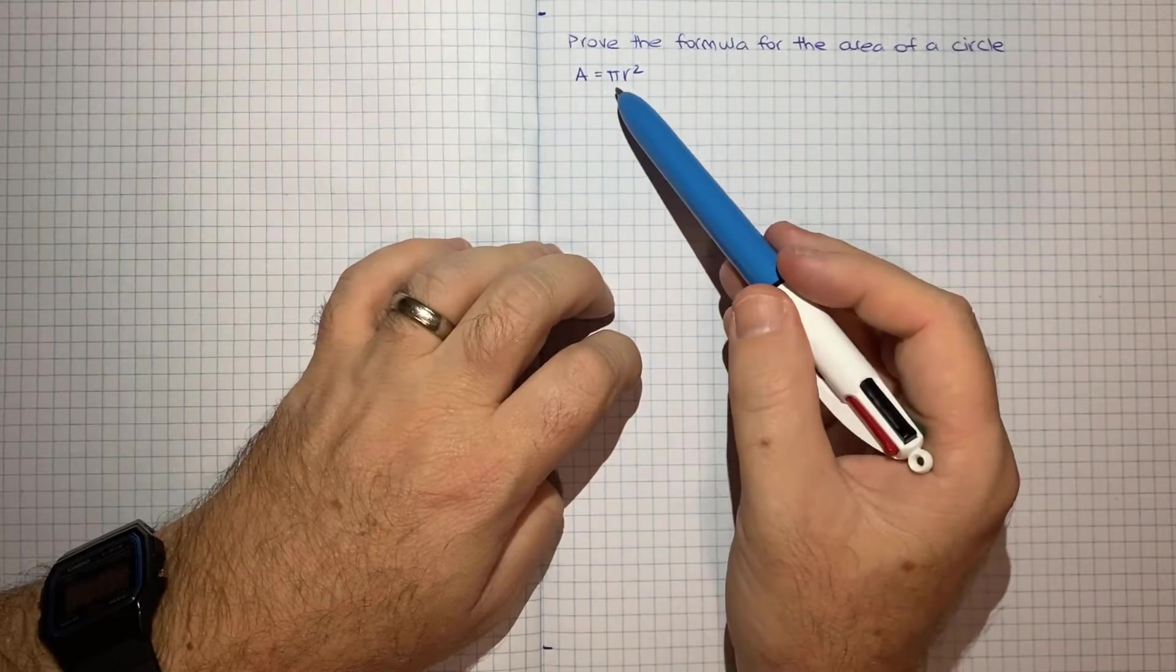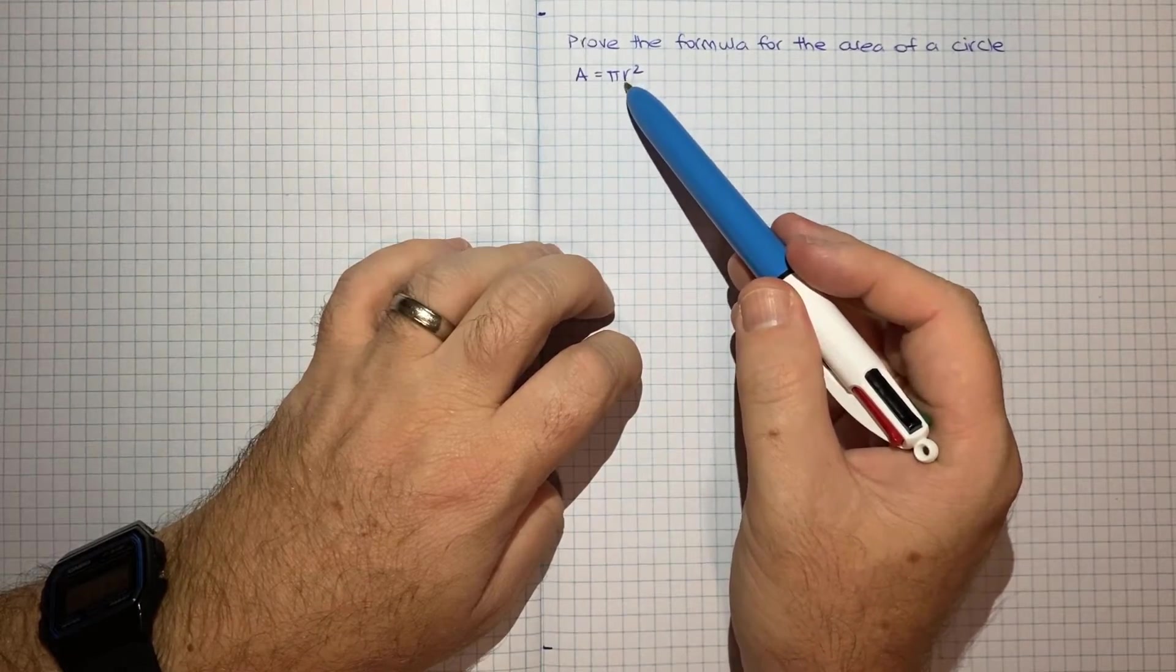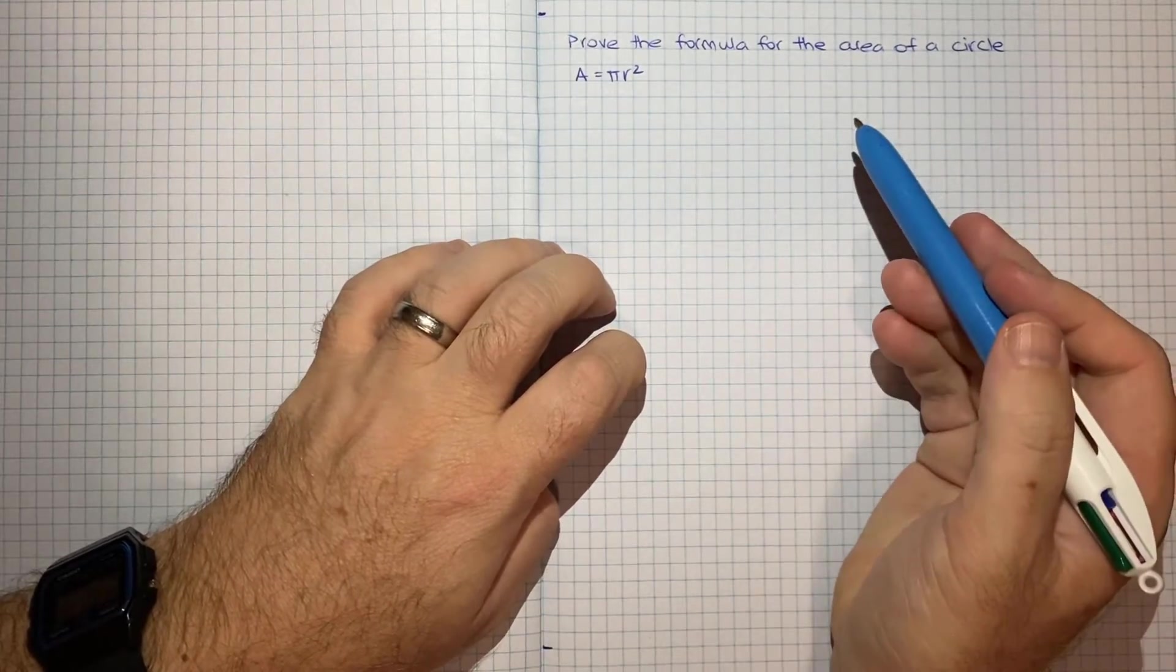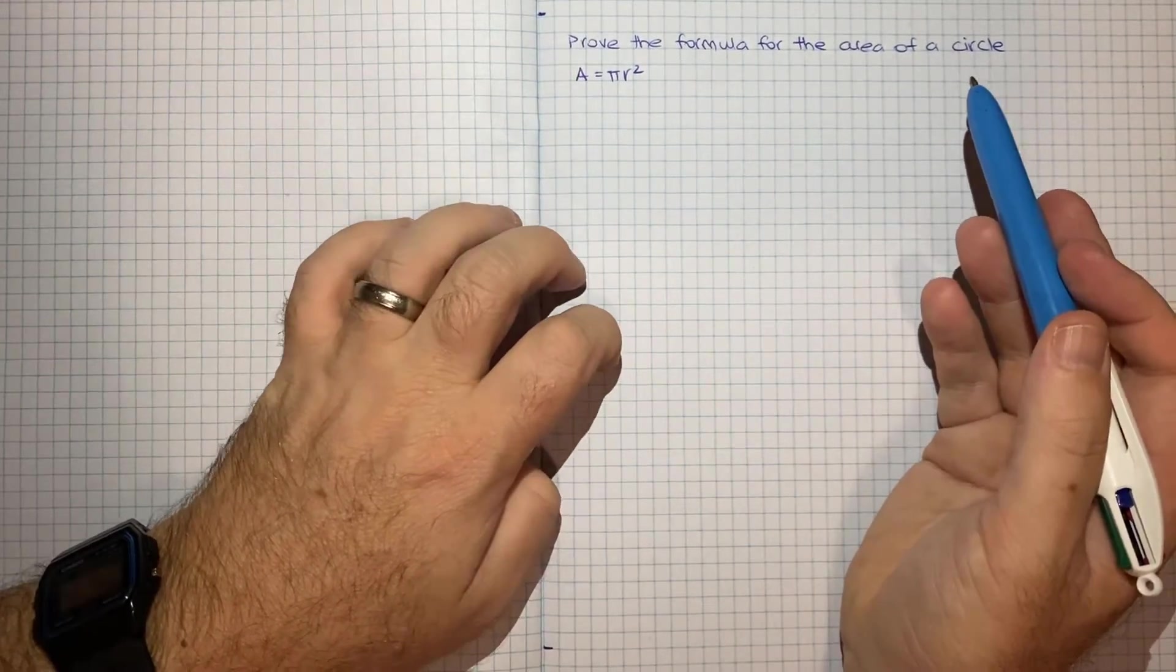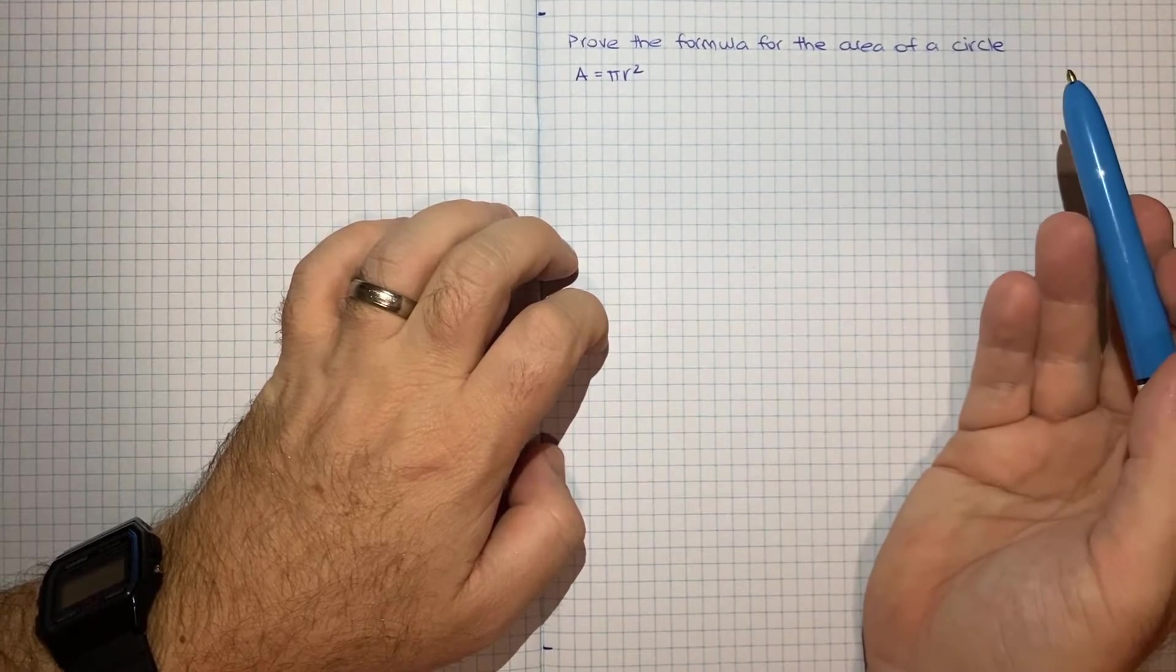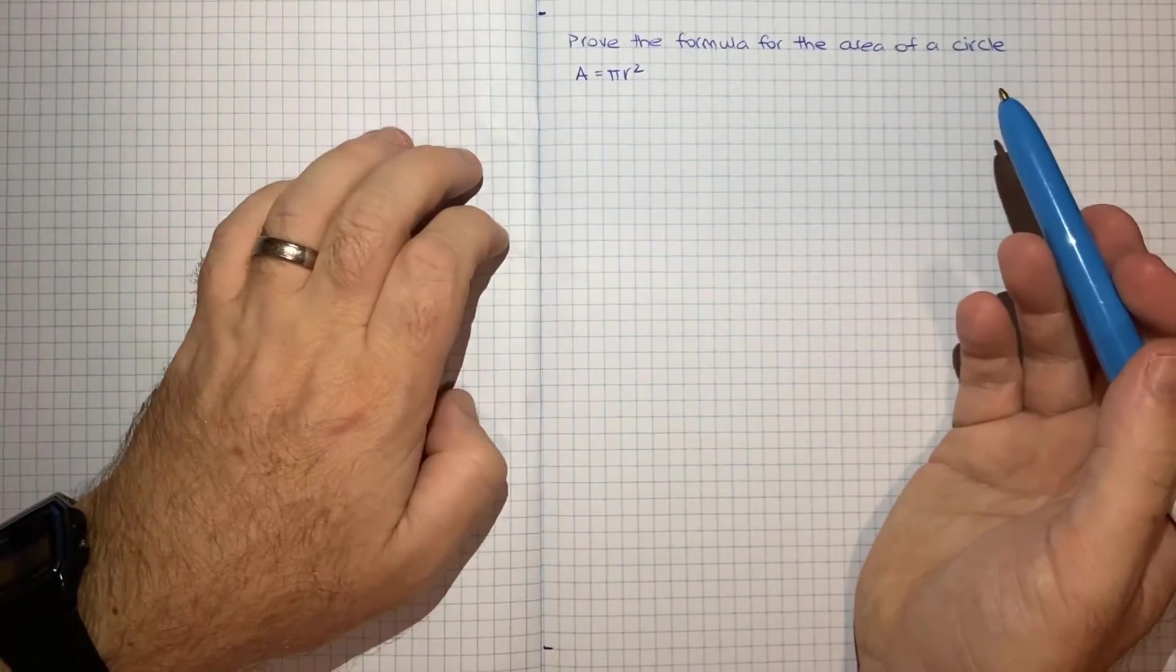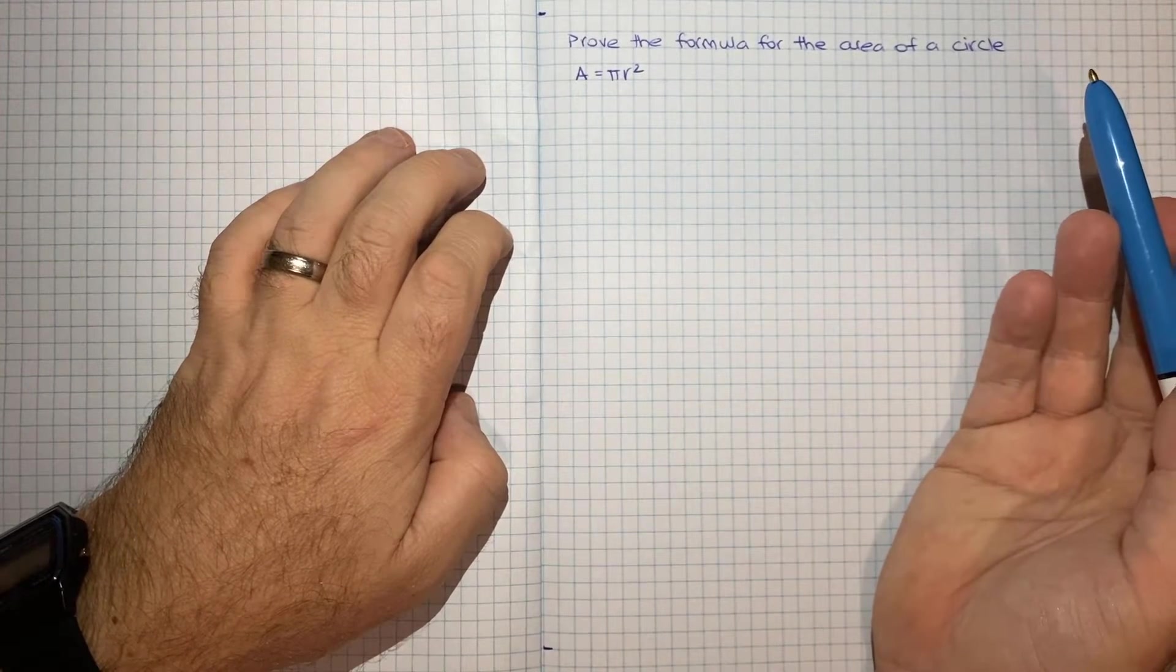So you may have seen that the area can be given by pi r squared, where r is the radius. But you may never have actually been shown a proof of that, and naturally there's probably many ways to prove it. But I stumbled upon a really interesting way to think about it that maybe you'll find interesting too, so I thought I'd share.